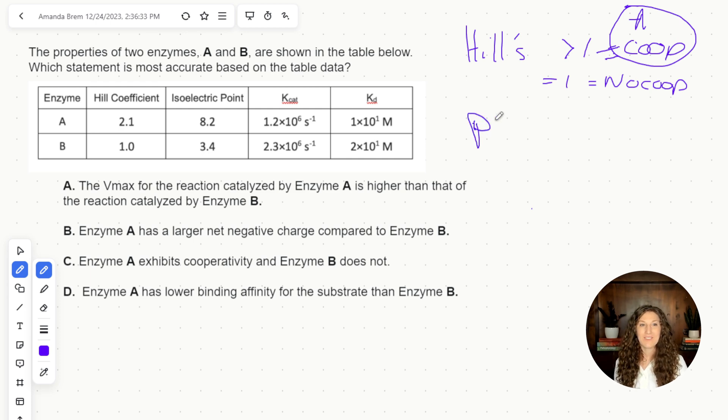Second, we have isoelectric point or PI. PI lets us know the charge of a protein or enzyme at a given pH. So what I can say is that the isoelectric point is higher for A than for B. And generally speaking, an isoelectric point that is higher, especially if we're at like a pH of seven, is going to be positively charged. So A is going to be more likely to be positively charged compared to B. For Kcat and KD, I'm looking and the numbers are pretty similar. So I'm going to hang on to that and not stress too much about it unless I need it for our questions.